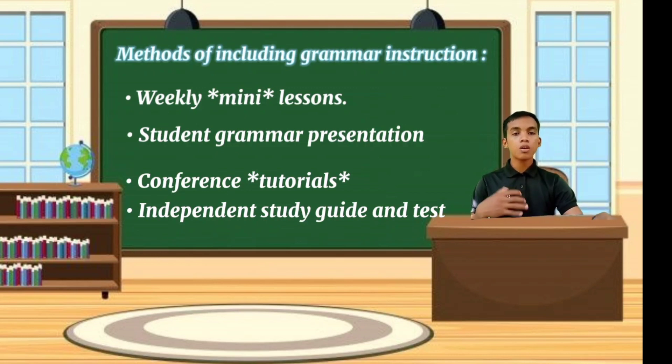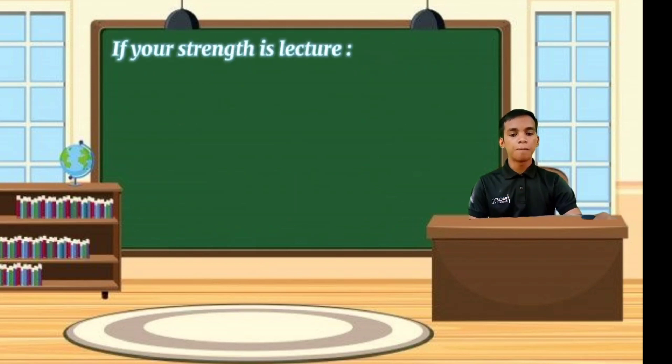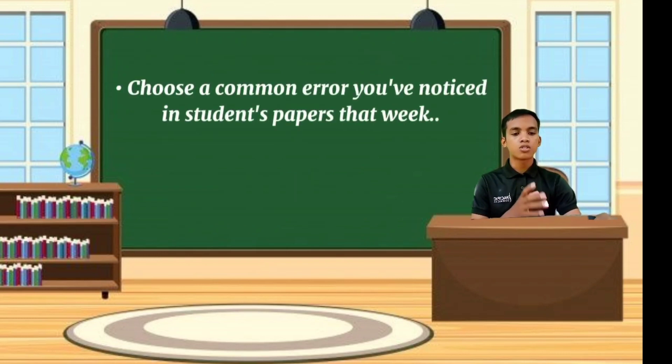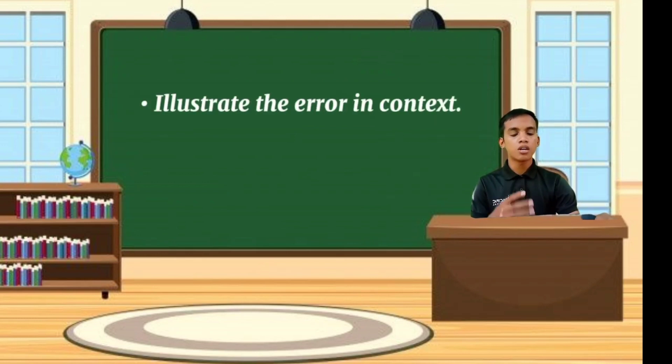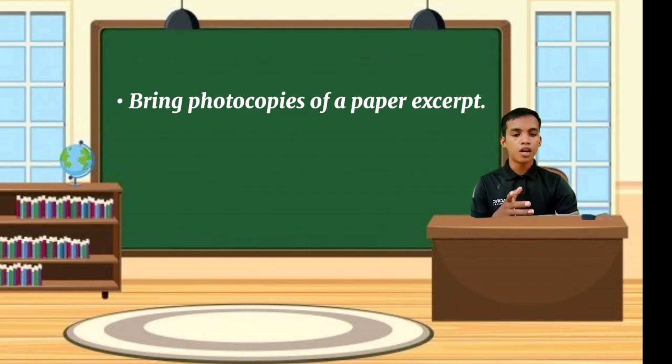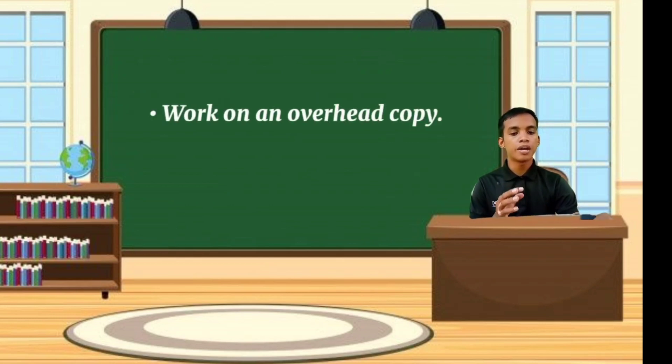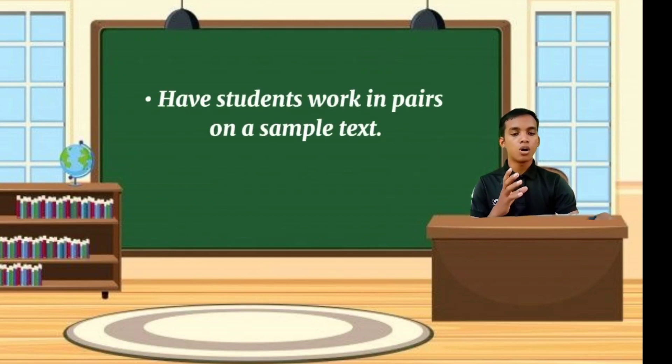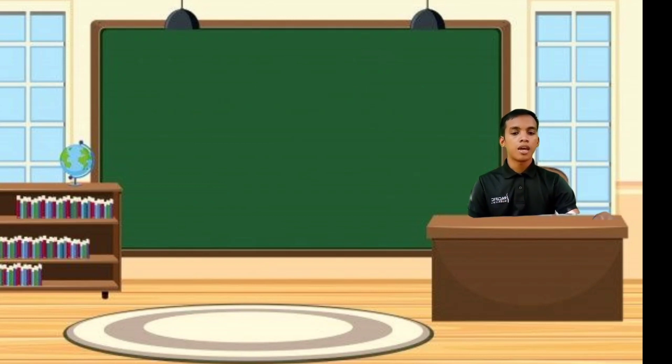First is weekly mini lesson. If your strength is as a lecturer, choose a common error you've noticed in students' papers. Illustrate the error in context. Bring photocopies of a paper excerpt, work on an overhead copy, offer methods of recognizing the error, and have students work with pairs on a sample text. The first approach may feel comfortable for those instructors whose strength is lecture. As you grade the students' papers, make note of common errors that appear.